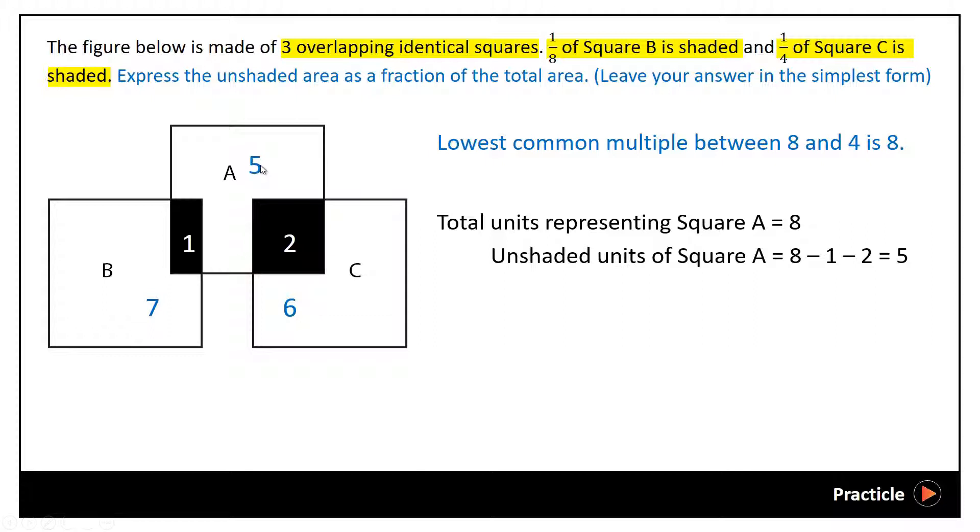So far so good. Now, the question asks us to find the unshaded area as a fraction of the total area. So we need to find the number of parts that are unshaded, and we can do that by taking 7 plus 5 plus 6, which gives us a total of 18 units.